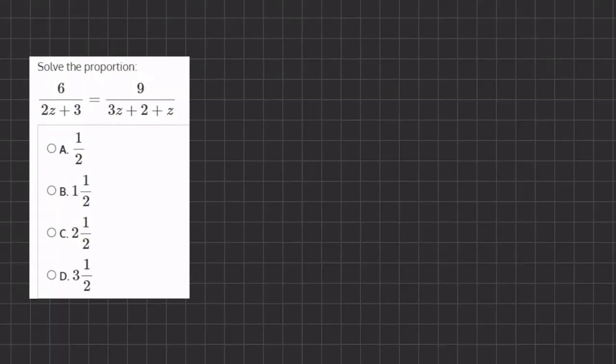Alright, so in this problem we want to solve the proportion, and to do so we will cross multiply. We'll multiply the denominator by this numerator and we'll multiply the opposite denominator with the opposite numerator. So it's going to look like this.